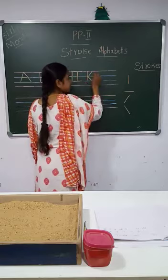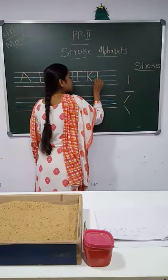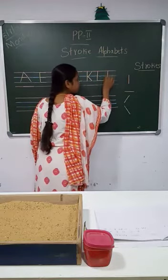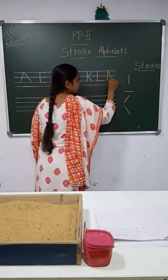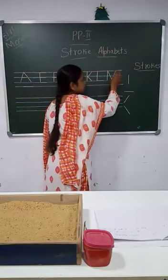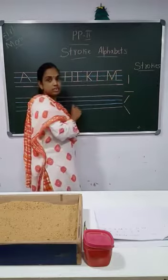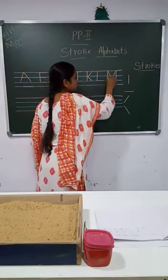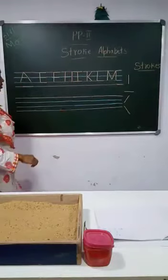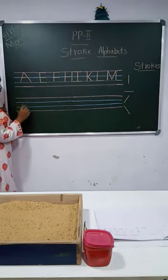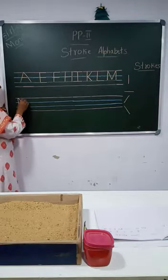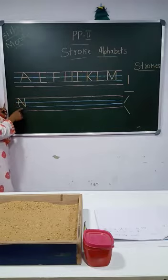Letter L: standing line, sleeping line at the bottom — letter L. Then letter M: standing line, right slanting line, right slanting line, left slanting line, then standing line — letter M. So next is letter N: standing line, right slanting line, one more standing line — letter N.